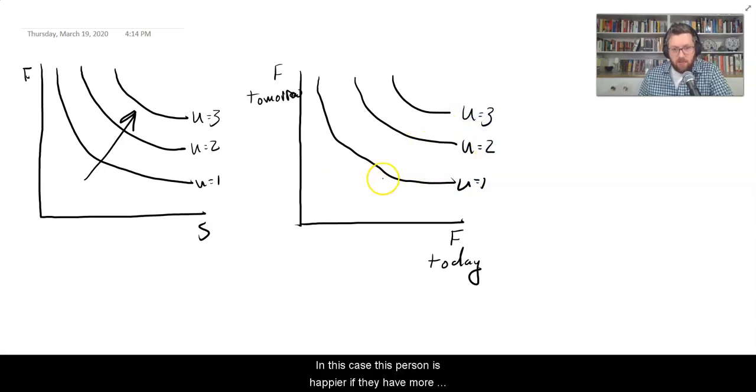In this case, this person is happier if they have more food today and tomorrow, but if they have to choose and trade off between having a lot today and a lot tomorrow, well, if they have a lot of food tomorrow but only a little bit today, they're indifferent between that and having a lot of food today but only a little tomorrow. And they're also indifferent between having sort of less of each but no major inequality. So we just think about it the same way if it's over time.